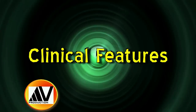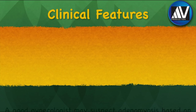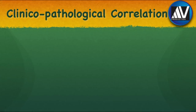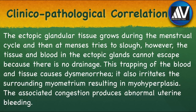First, I will discuss the clinical features of Adenomyosis. A good gynecologist may suspect Adenomyosis based on clinical features and make a diagnosis using imaging modalities, but the final diagnosis usually has to wait until hysterectomy is performed. Today, we have understood the pathology of Adenomyosis to the extent that a clinical-pathological correlation can be made. It is believed that the ectopic glandular tissue grows during the menstrual cycle and then attempts to slough. However, the tissue and blood in the ectopic glands cannot escape because there is no drainage. This trapping of blood and tissue causes dysmenorrhea. It also irritates the surrounding myometrium, resulting in myohypertrophy. The associated congestion produces abnormal uterine bleeding.